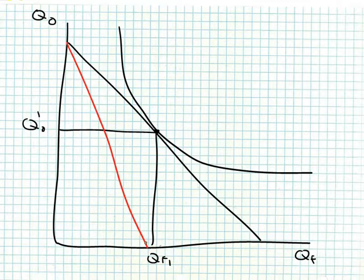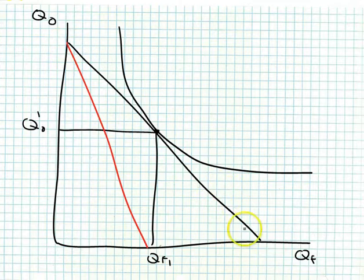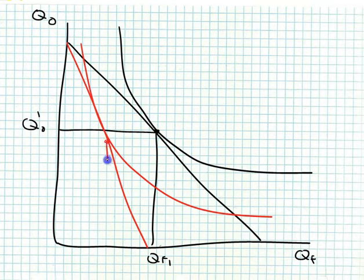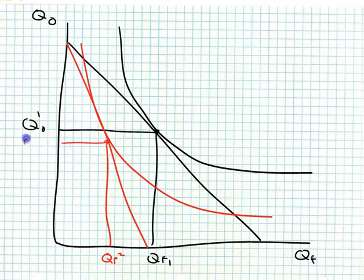Now we're going to increase prices. We see that the budget line rotates around the maximum quantity of the good whose price didn't change — that would be other goods — and rotates in because now I can buy less food when price increases. I can look at this particular consumer and draw a representative indifference curve.